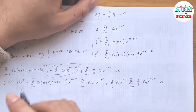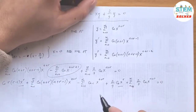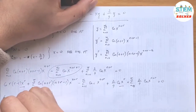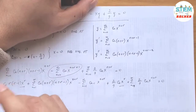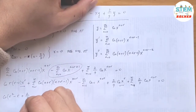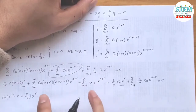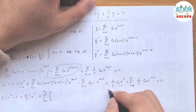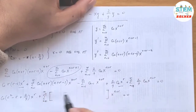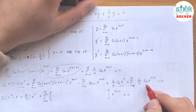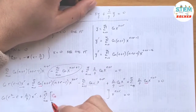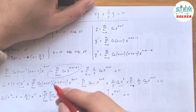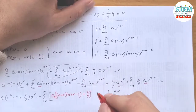Combining like terms: for the x to the r terms, factor out c_0 and distribute to get c_0 times (r(r minus 1) plus 2/9) times x to the r. For the remaining series terms, factor out x to the n plus r to get c_n times [(n plus r)(n plus r minus 1) plus 2/9] minus c_{n minus 1}, which must equal 0.